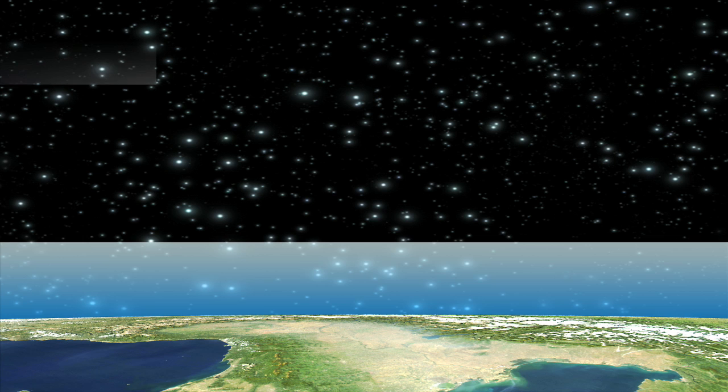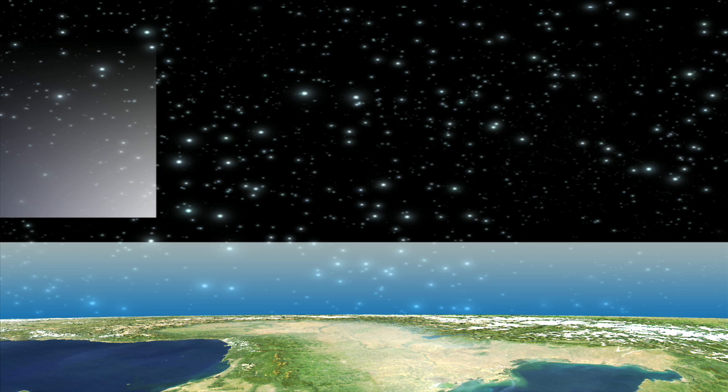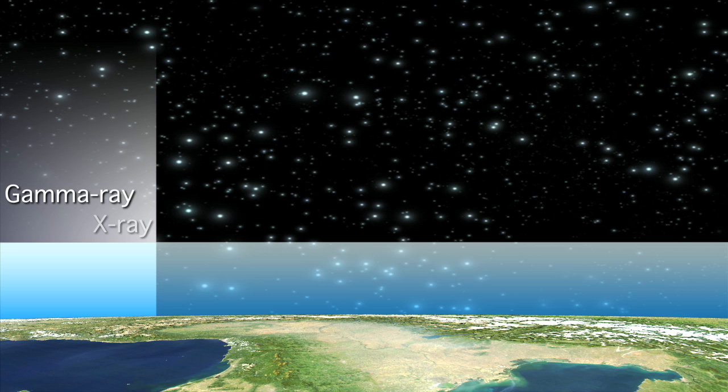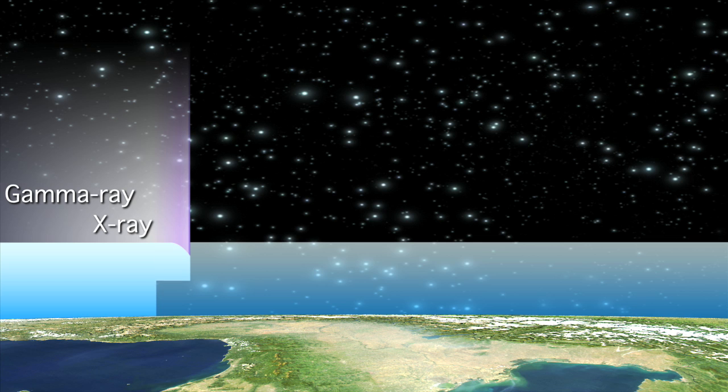Fortunately for life on Earth, the dangerous high-energy gamma and X-rays are absorbed by oxygen and nitrogen in the upper atmosphere. Most ultraviolet wavelengths are absorbed by oxygen and ozone molecules in the upper atmosphere and stratosphere, although a few very specific wavelengths do make it through.